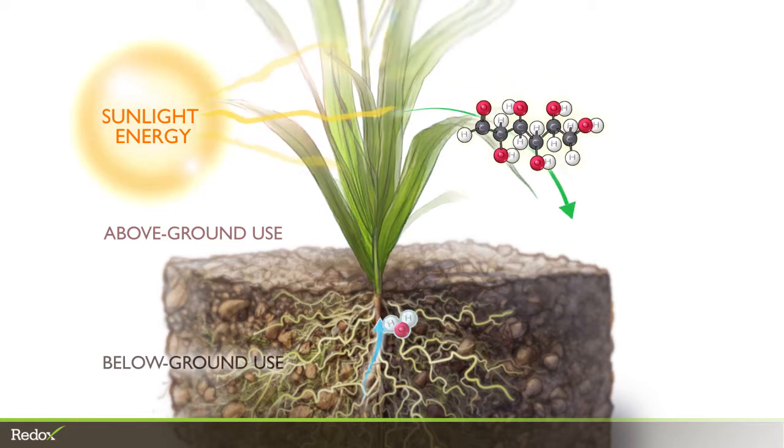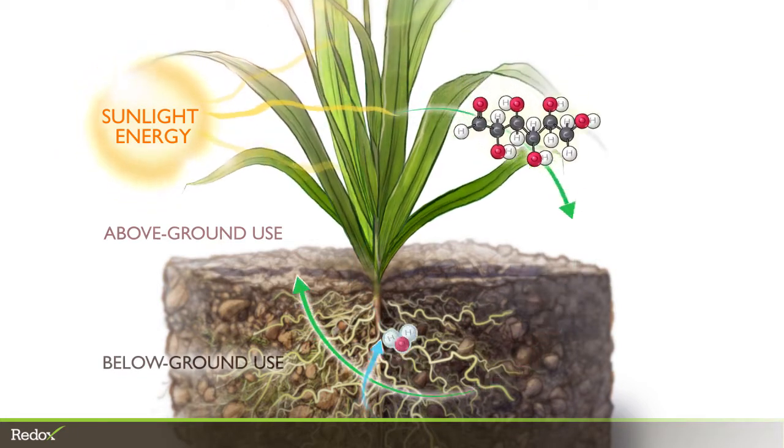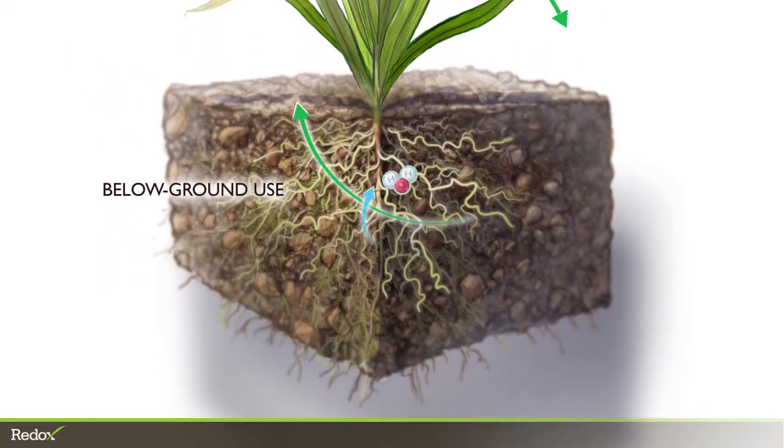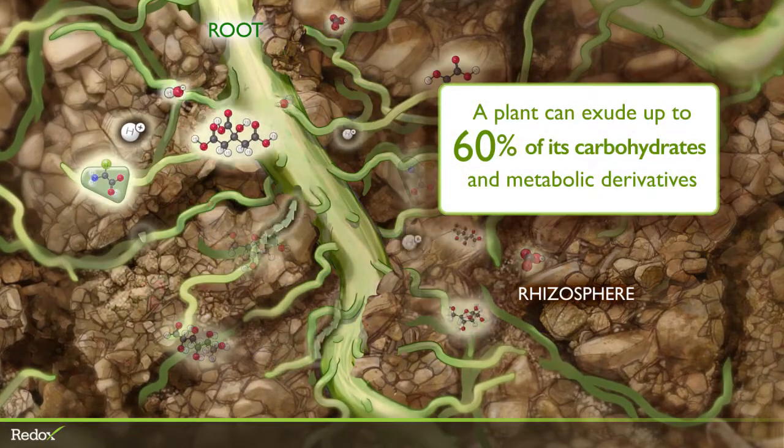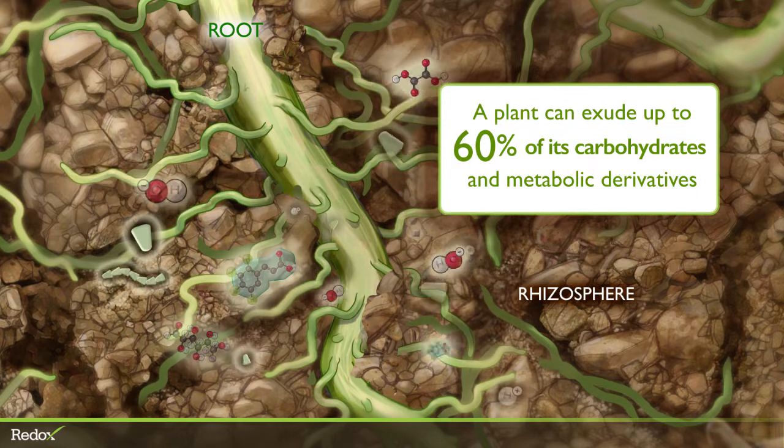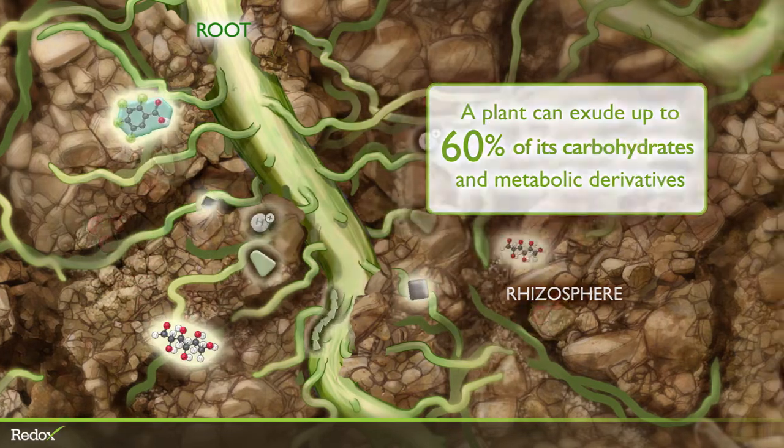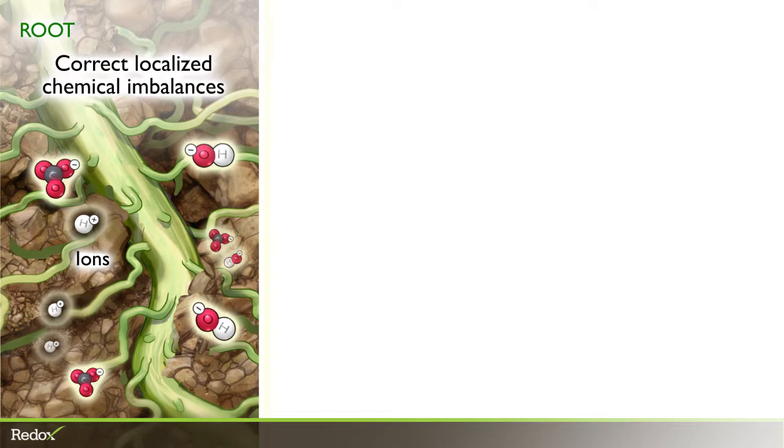Carbohydrates can be the building blocks for growth, but they can also be used to modify a plant's surroundings. Through its roots, a plant can exude up to 60% of its carbohydrates into the rhizosphere in an effort to correct localized chemical imbalances.